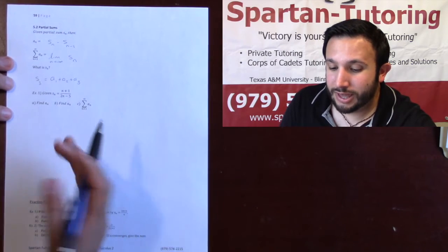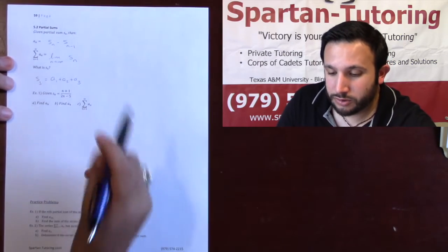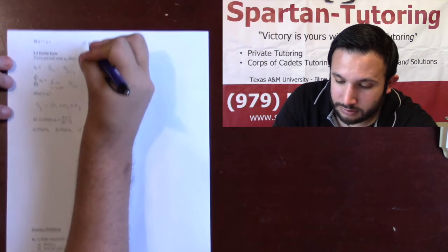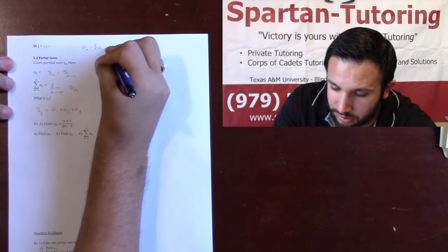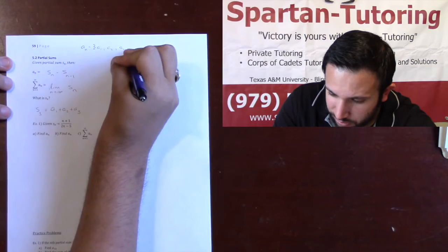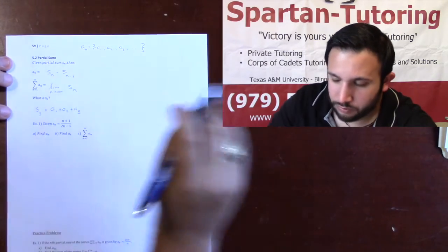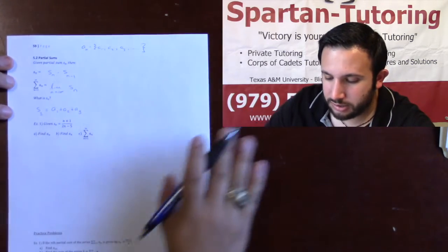Remember, what's a sequence? An is just a list of numbers. Your An is simply A1, A2, A3, and so forth. A sequence is just a list of numbers.